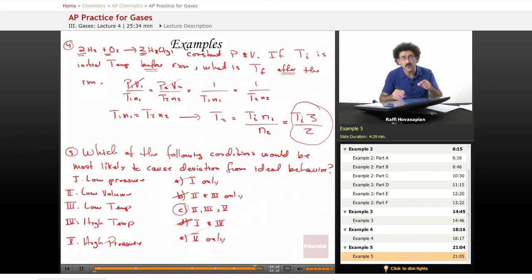Low volume, low temperature, high pressure - the idea is the low volume part. Low volume comes from high pressure. Low volume comes from low temperature. So that's what you have to keep in mind. Deviant behavior comes when you have low volumes.